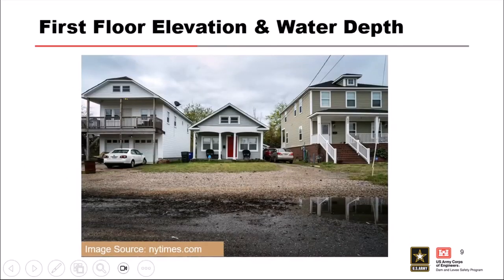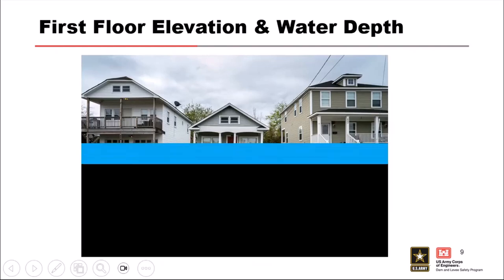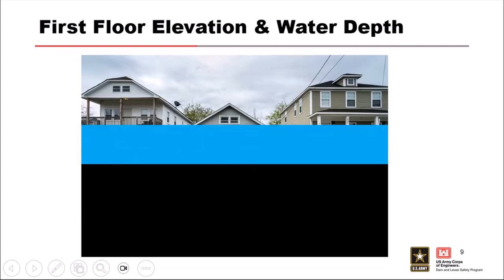Here's an example of first floor elevation and water depth. If we assume the black bar is the water level, and every single structure's first floor elevation is above that black bar, we would expect zero damages at that point. But as water creeps up, if you have a really low foundation height, you'd start to see damages at those structures. Damage ramps up considerably if you have a low foundation height compared to a higher one, and if you're in a single-story structure compared to a two-story structure. Things like contents on the second floor would reduce damages compared to everything on the first floor.